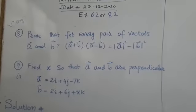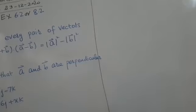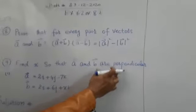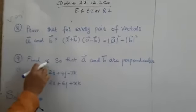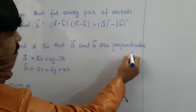This is the second part. We have to prove that A and B are perpendicular.